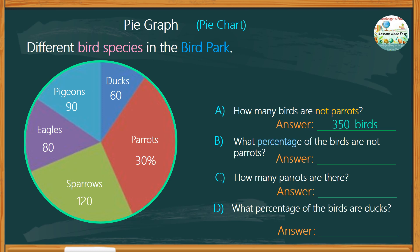What percentage of these birds are not parrots? Since the pie graph shows 30% of the birds are parrots, therefore all the other birds combined make up 70%.